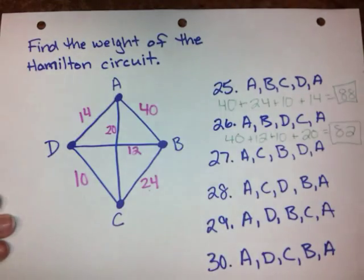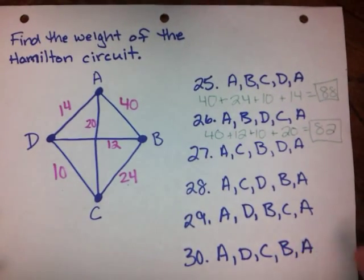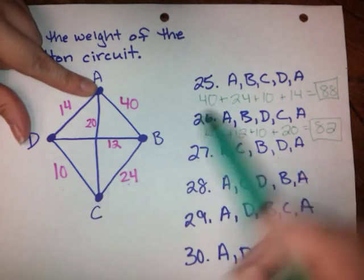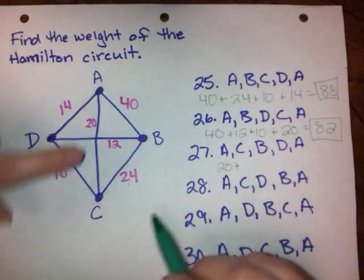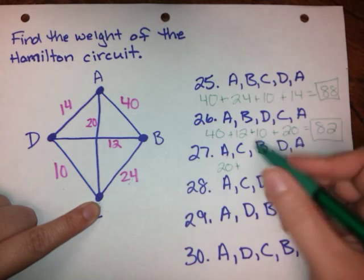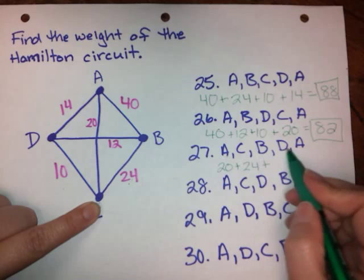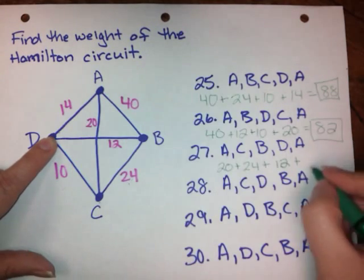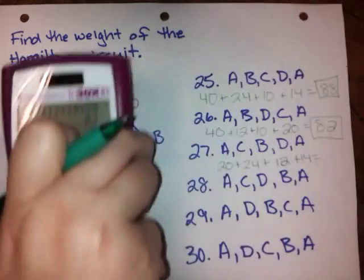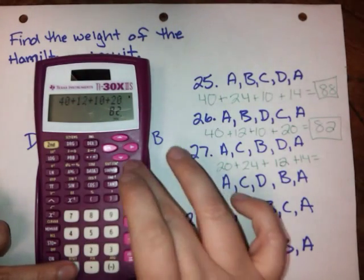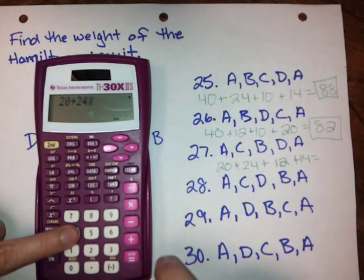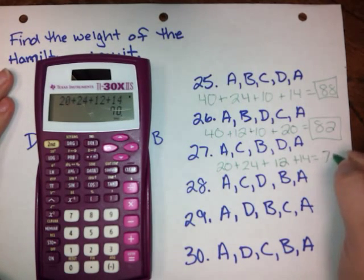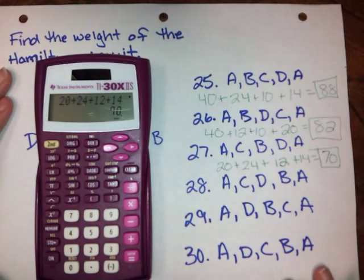All right, number 27. Same idea, let's follow the circuit that they've given us. A to C, that's 20. Plus C to B, that's 24. Plus B to D, B to D is 12. Plus D back to A, that one had a weight of 14. Plug it into our calculator. 20 plus 24 plus 12 plus 14 gives us 70. So the answer for 27 is 70.